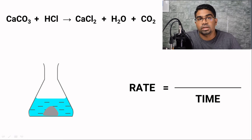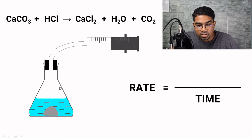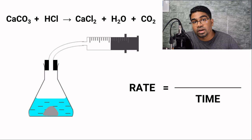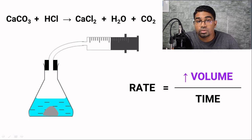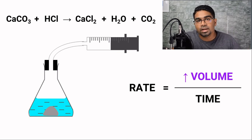Whenever a gas is released, this can be easily tracked. We can use a gas syringe. A gas syringe has a scale and is connected to the conical flask through a delivery tube. Whatever gas is formed will pass through the delivery tube into the gas syringe, and we can directly take the volume of gas that is produced. The rate of reaction can be quantified using the increase in the volume of carbon dioxide gas produced per unit time. The more the volume of gas produced in one unit of time, the higher the rate of reaction.